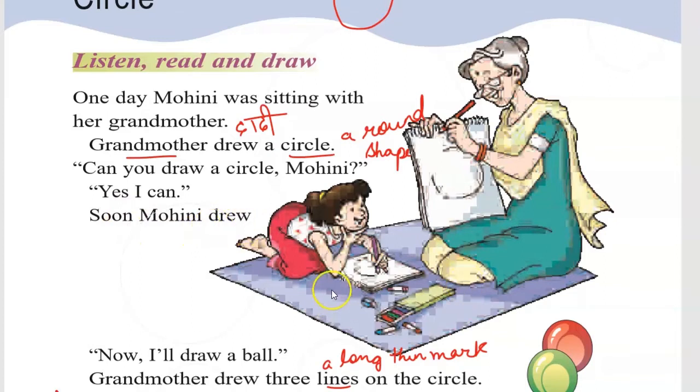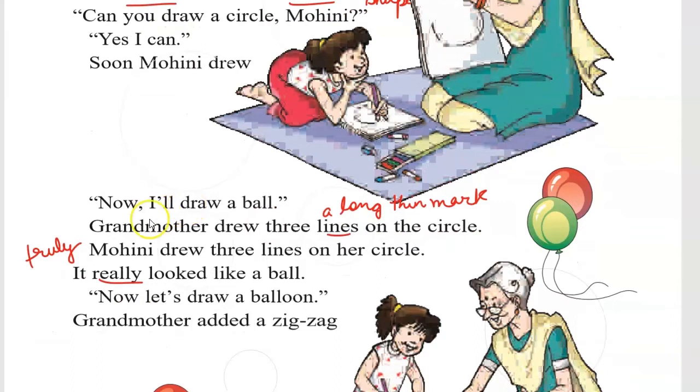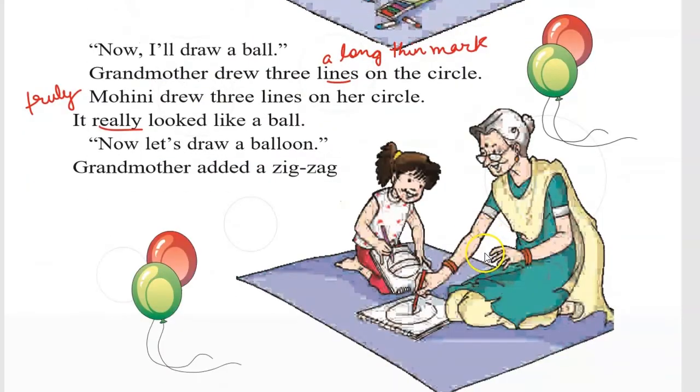Soon Mohini drew a circle. Now I will draw a ball. Grandmother drew three lines on the circle. Lines are long and thin marks, like this. Three lines drawn.